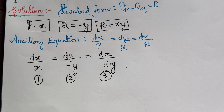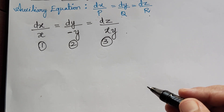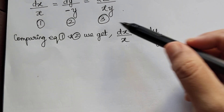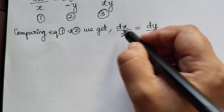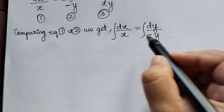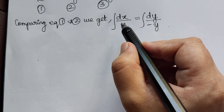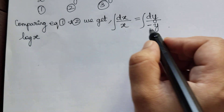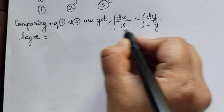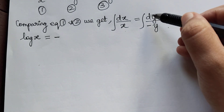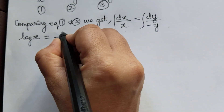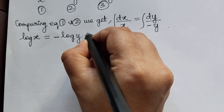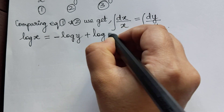First, I am going to compare equations 1 and 2. So we get dx by x equal to dy by negative y. Now let us integrate on both sides. The integral of dx by x is log x, and the integral of dy by y is log y, with the negative sign.